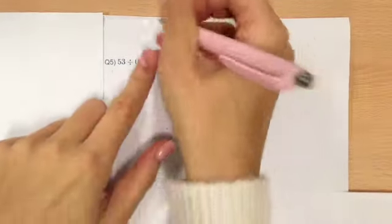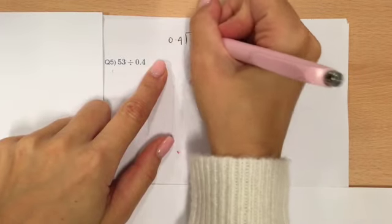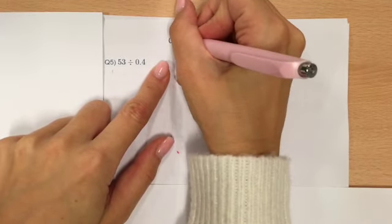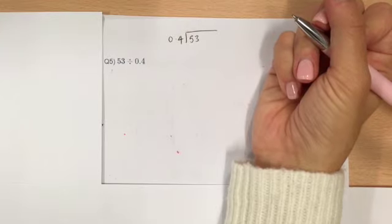So, what you have to do on these is you need to get rid of the decimal, ideally. Otherwise, it's not going to be easy to do, because if you imagine, you would have 0.4 on the outside of your division and then 53 on the inside, and that's going to be really difficult. So, what you would do is you need to get rid of it.